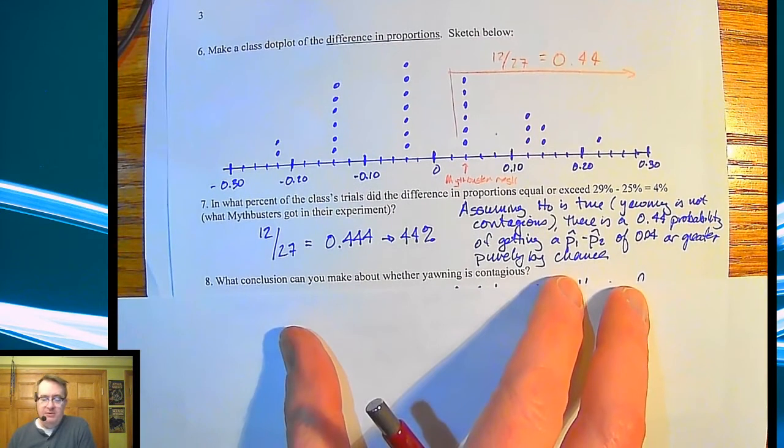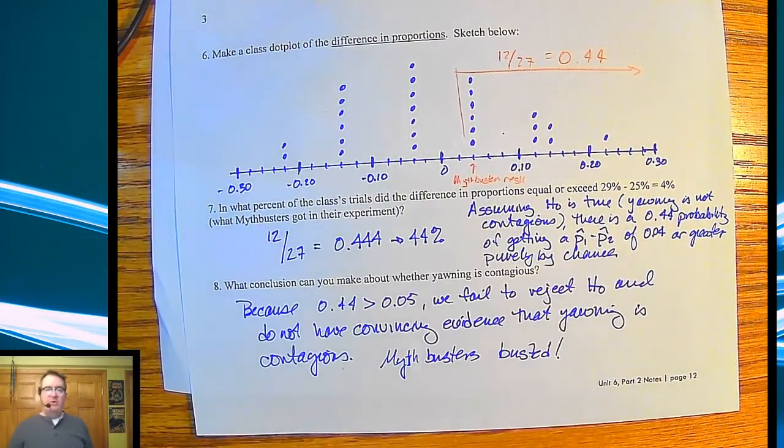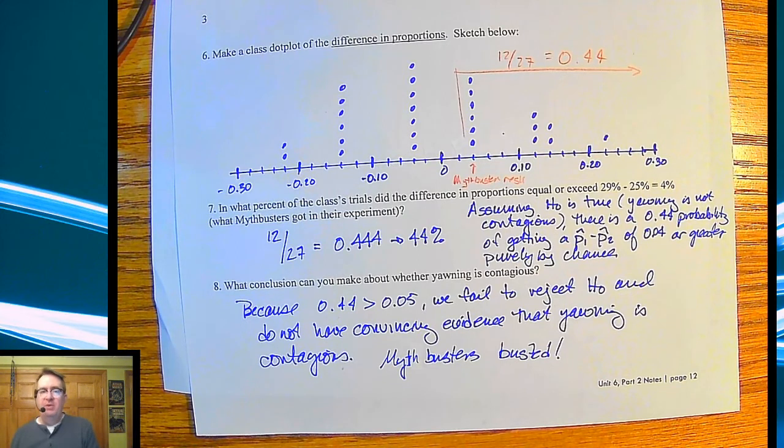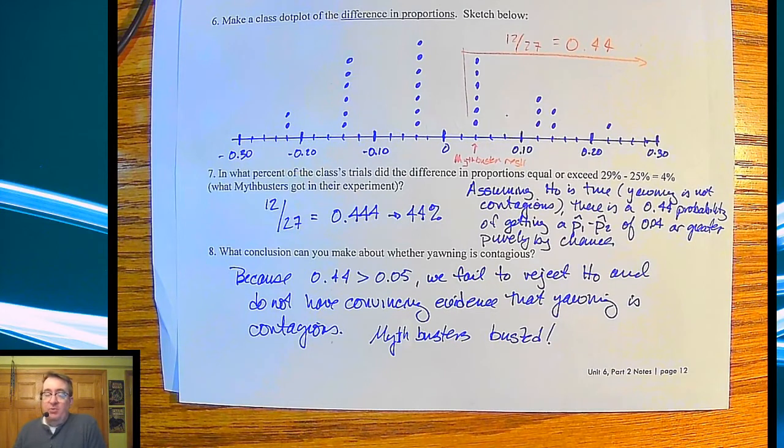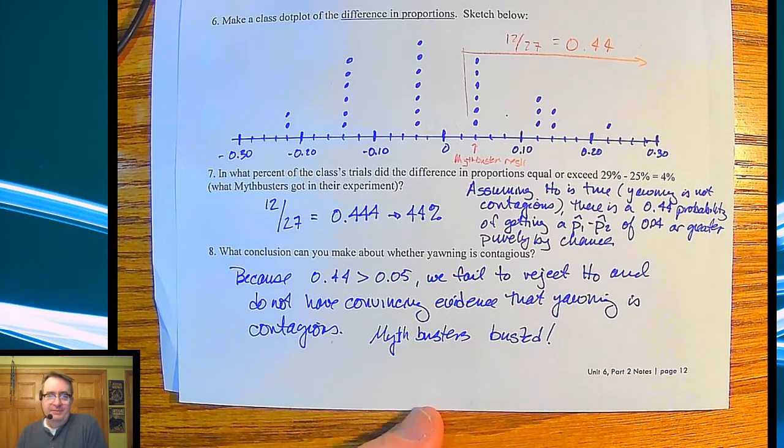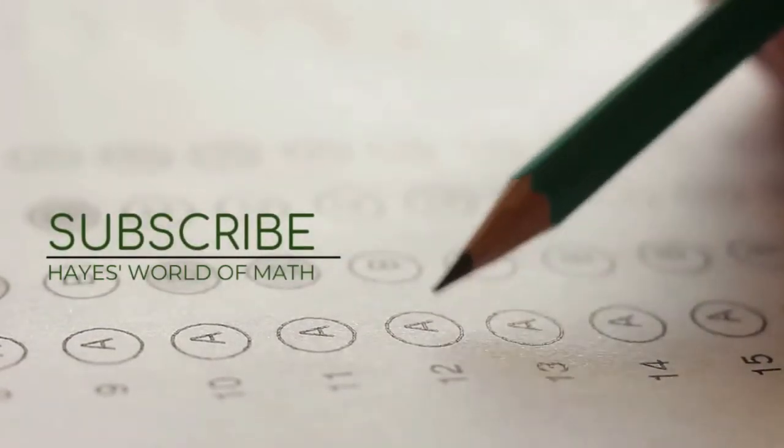So the conclusion, what can we draw about this? Well, very simply, because 44% is bigger than 5%, and remember 5% is kind of just that basic level that we use, unless told otherwise, we fail to reject the null hypothesis. And we do not have convincing evidence that yawning is contagious. We basically busted the MythBusters. So we're going to start to formalize this in the next one. We're going to kind of lay out what the first two steps are. Tomorrow, or in the next video, depending upon how you're pacing this, we're going to kind of wrap everything all up. And again, a lot of the same things, but there are some differences if you're talking about if you're setting up an experiment versus going through and randomly picking people out of a group. So anyway, we'll see you in a few minutes. Talk to you soon. Bye.